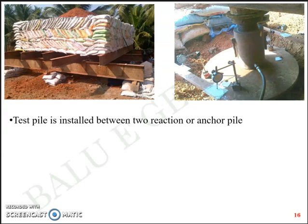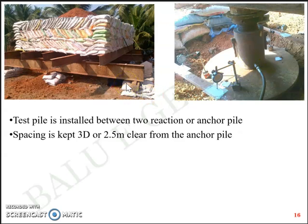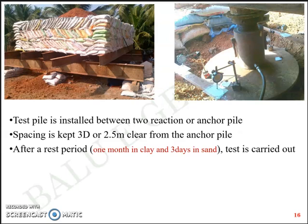The test pile is installed between two reaction piles or anchor piles. The spacing is kept at three times the diameter or 2.5 meters clear from the anchor pile. Anchor piles are used on either side of the test pile because when applying an axial compressive load onto the test pile, there must be some mechanism to transfer the reaction onto the soil. These are called reaction piles or anchor piles — usually of screw type or underreamed piles since they carry tensile force. After a rest period — usually one month in clay and three days in sand — the pile load test is carried out.